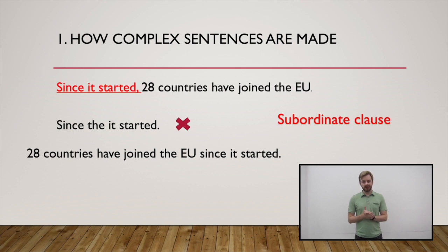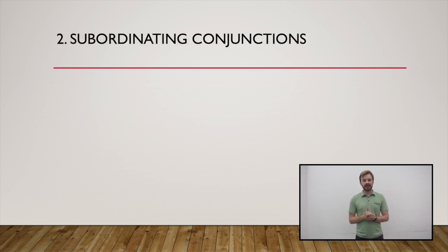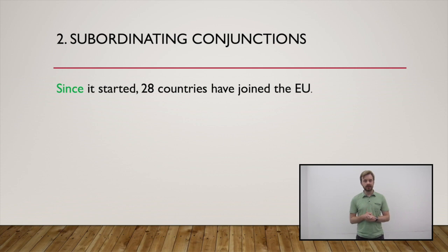Subordinating conjunctions. A subordinate clause has a conjunction that connects the two parts of the sentence. In this example, the word since connects the two parts. The subordinate clause adds to the main clause by including information about time to help show more importance to how many countries have joined after the EU started. Since is a conjunction of time.